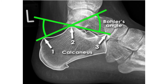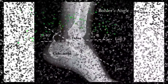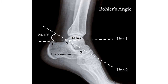Severe injury may result in flattening of the calcaneus and a resulting decrease in Böhler's angle. Another name for Böhler's angle is the tuber angle. An angle less than 20 degrees is suggestive of a calcaneus fracture or disruption of the posterior facet.